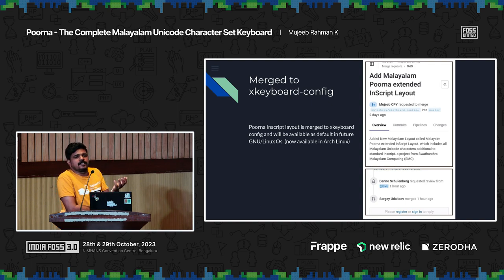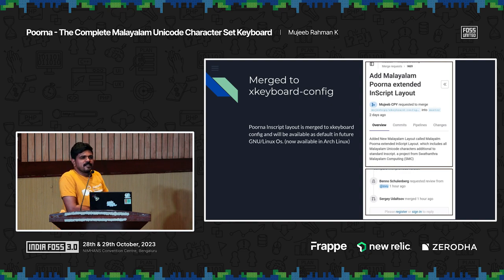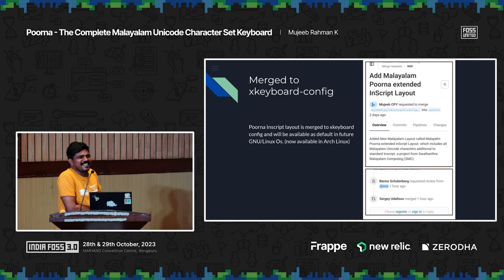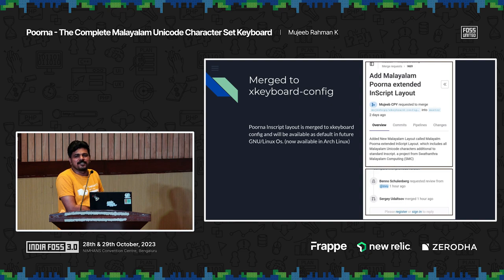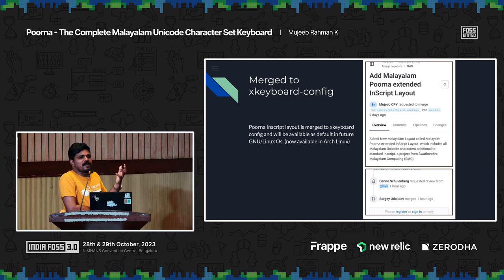In future GNU/Linux operating systems, Poorna will come by default. If you install any GNU/Linux operating system, Poorna will come by default. Now, if you are an Arch Linux user, it will already be there. This is also Arch — it is Endeavor OS, by the way. So that is the big news: Poorna is merged into XKeyboard config, which means in future operating systems, you will get Poorna by default.